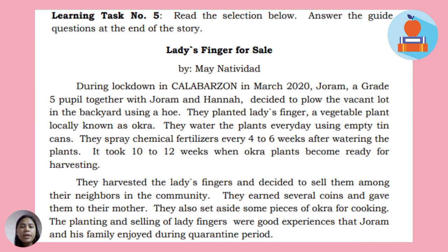For Learning Task 5, read the selection below and answer the questions at the end of the story. 'Ladies Finger for Sale' by Nina Tividad. During lockdown in Calabarzon in March 2020, Joram, a Grade 5 pupil together with his siblings, decided to till a vacant plot in the backyard using a hoe. They planted Ladies Finger, a vegetable plant locally known as okra. They watered the plants everyday using empty tin cans and sprayed chemical fertilizers every 4 to 6 weeks after watering. It took 10 to 12 weeks for the okra plants to become ready for harvesting. They harvested Ladies Finger and decided to sell them among their neighbors. They earned several coins and gave them to their mother. They also set aside some pieces of okra for cooking. The planting and selling of Ladies Finger were good experiences that Joram and his family enjoyed during the quarantine period.